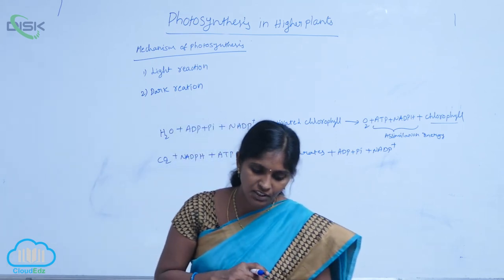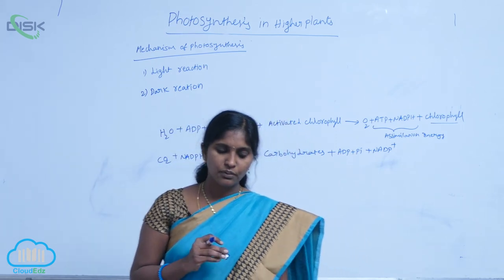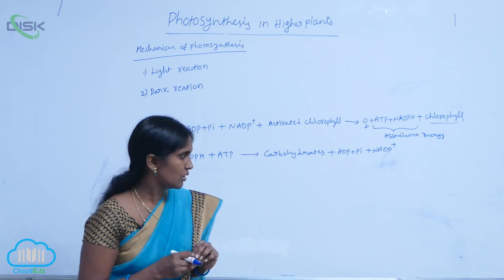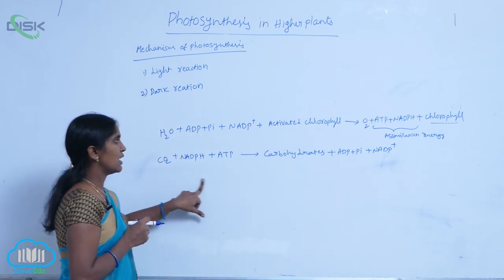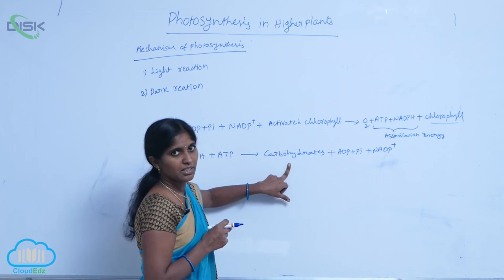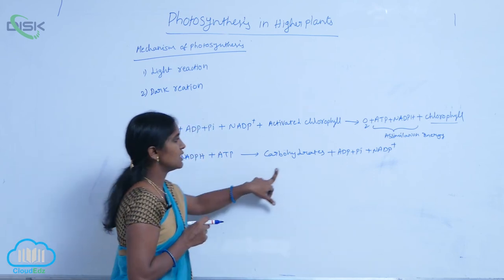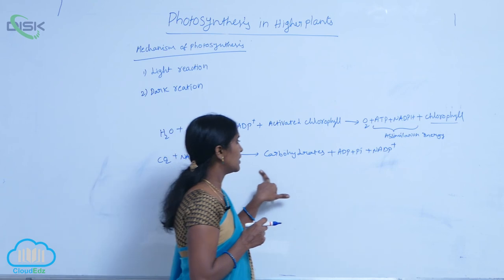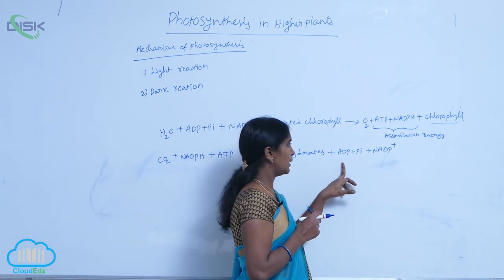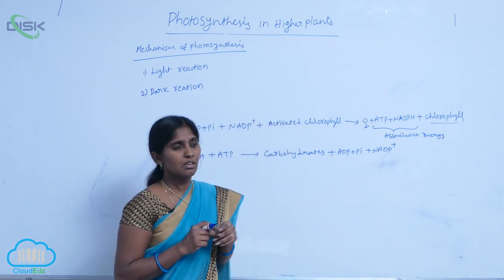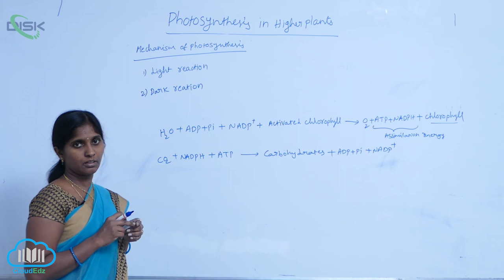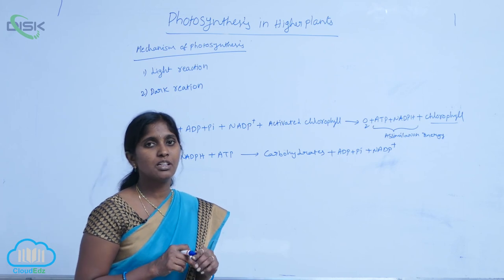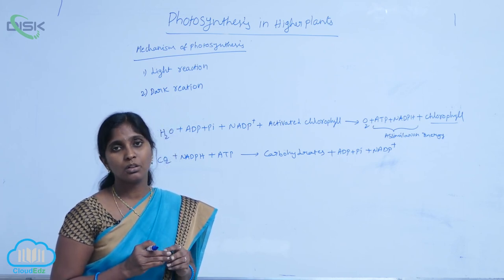Dark reaction is where CO2 fixation happens. Assimilation of carbon is carried out. Here, CO2 is reduced to carbohydrates. The assimilation energy is used for the production of carbohydrates, and ADP and NADP are released. This is the summary reaction of dark reactions. Dark reactions occur in the stroma of chloroplast.